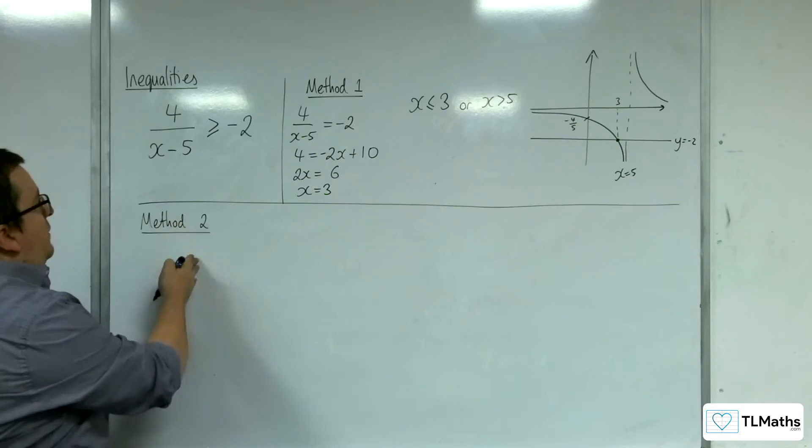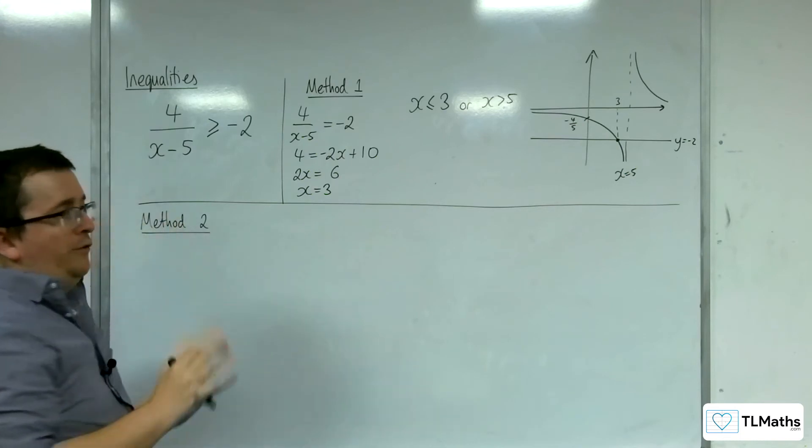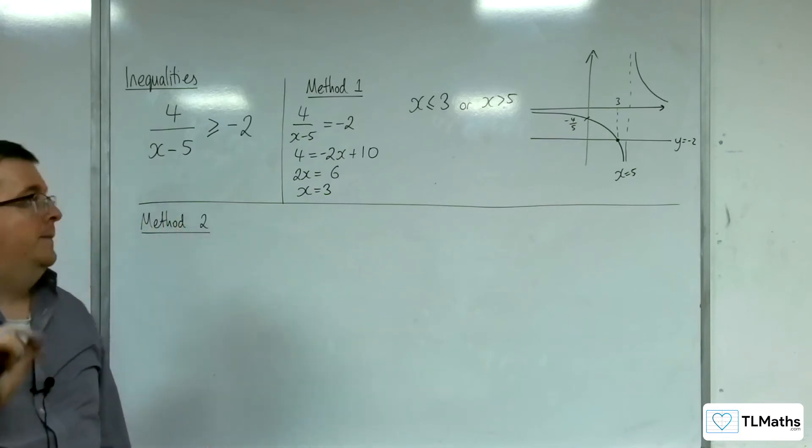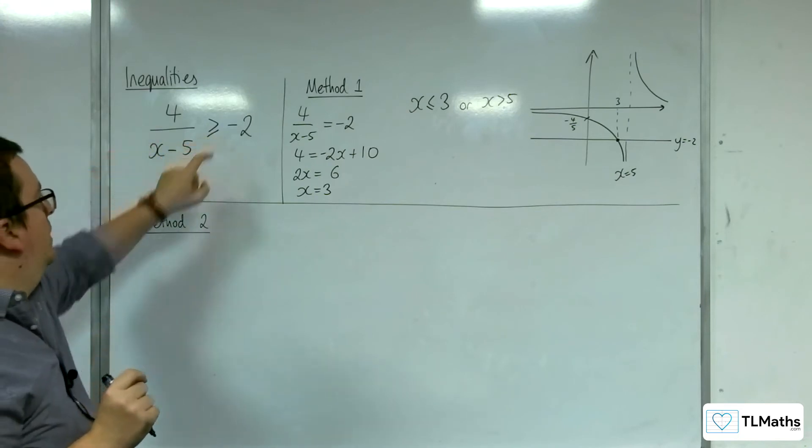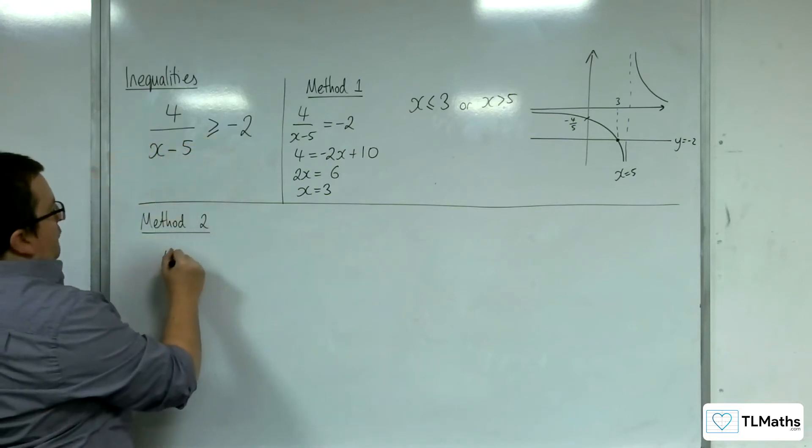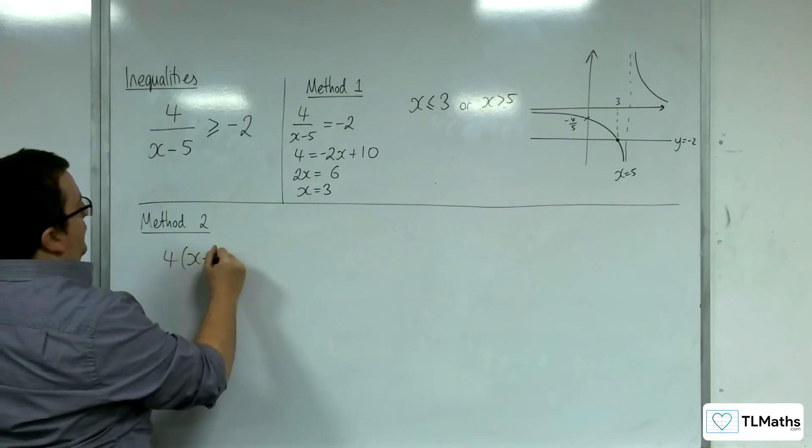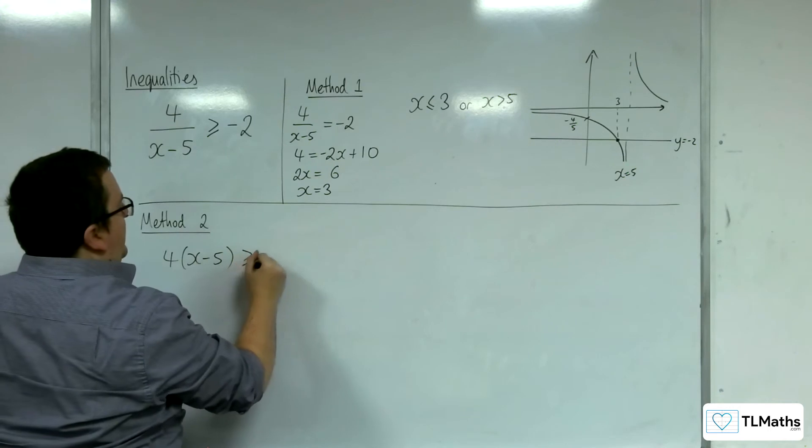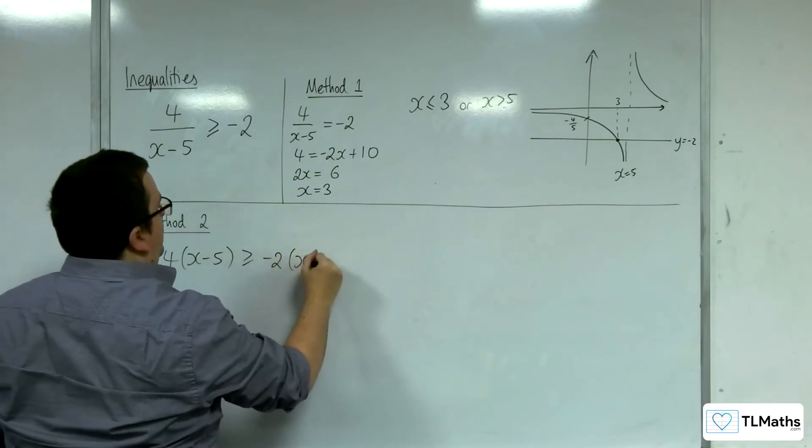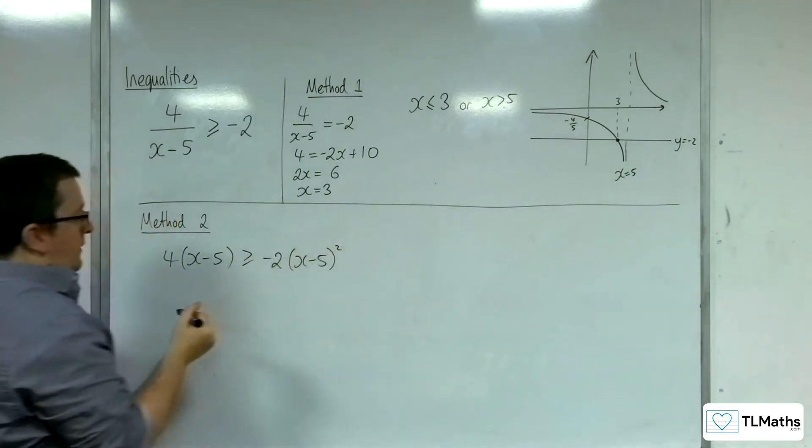So let's say I use method 2 now. So I'm going to multiply both sides by x minus 5 squared. So multiply by the denominator squared to make sure you don't flip the inequality symbol. So I'm going to get 4 lots of x minus 5 on the left-hand side is greater than or equal to minus 2 lots of x minus 5 squared on the right-hand side.